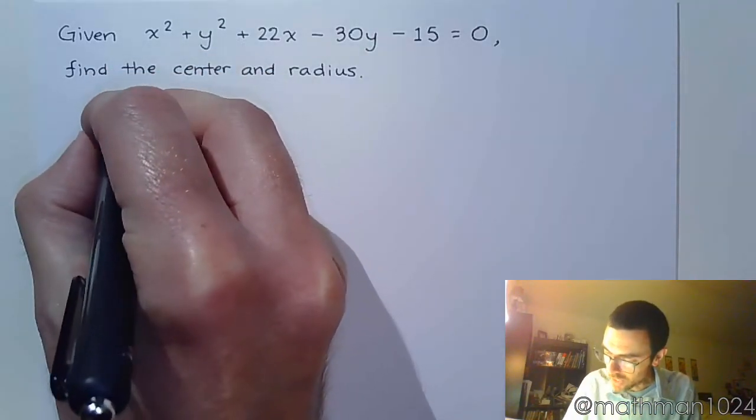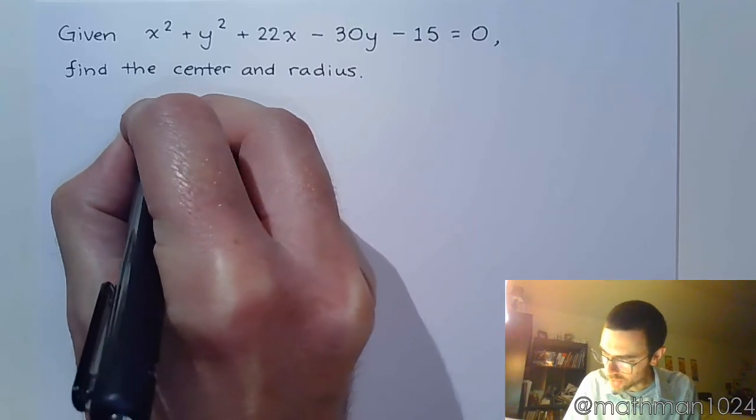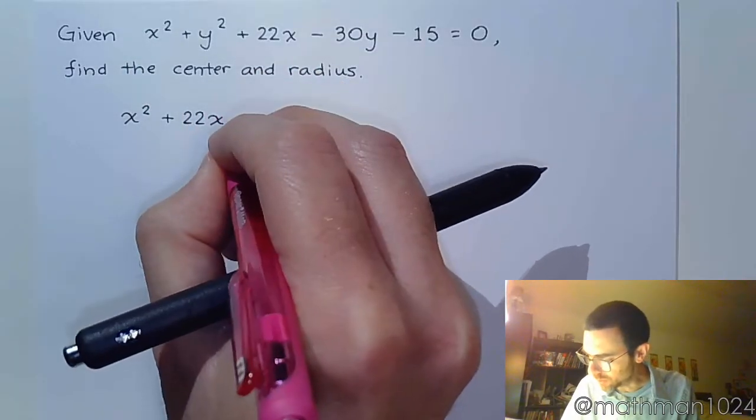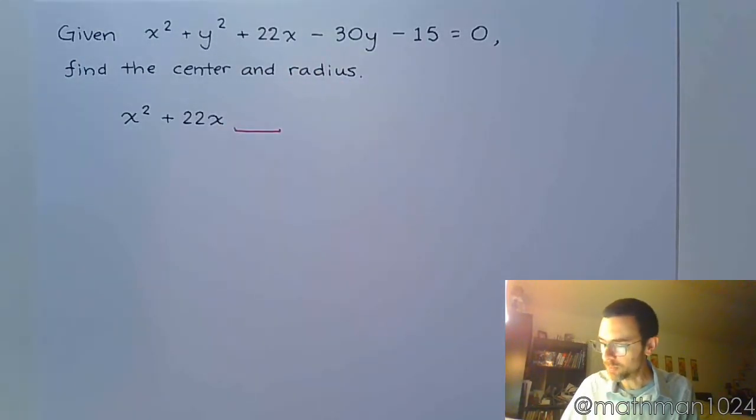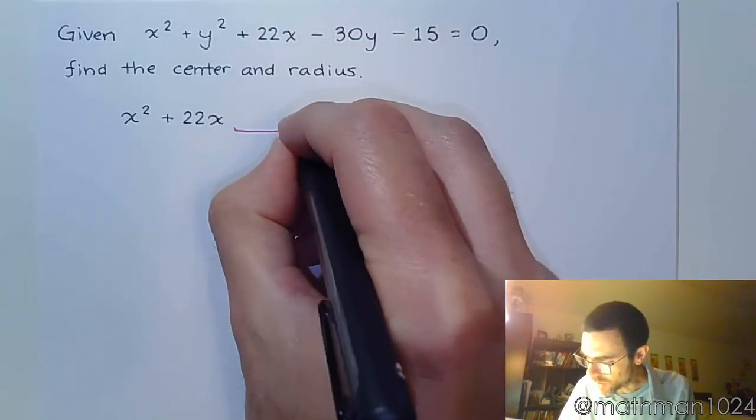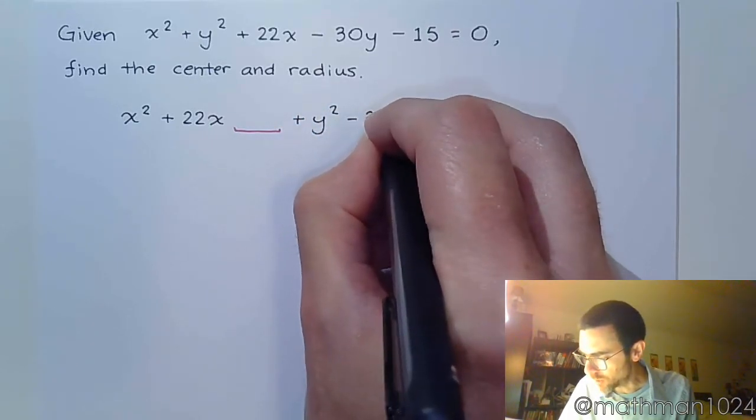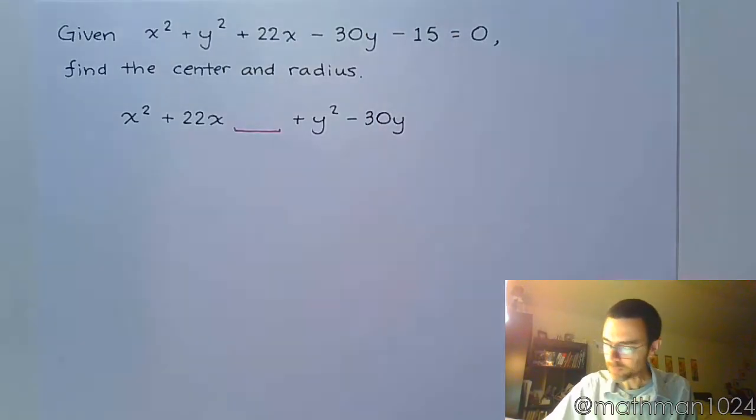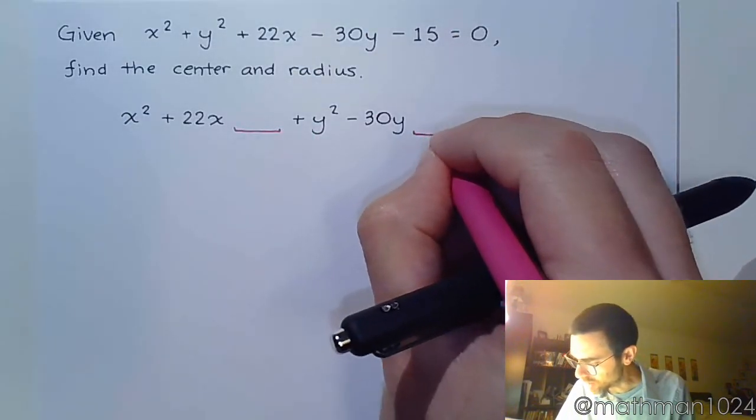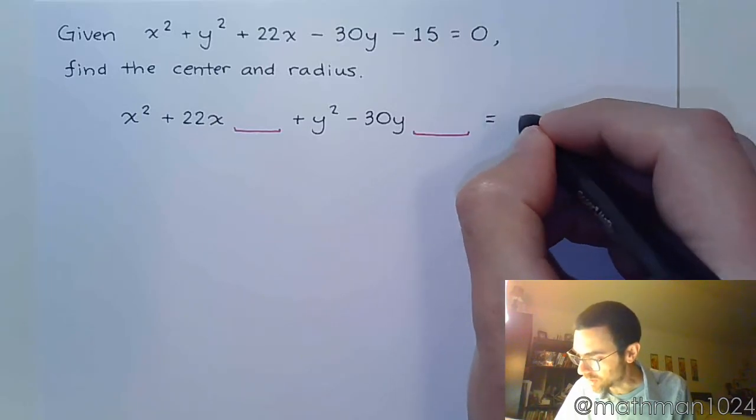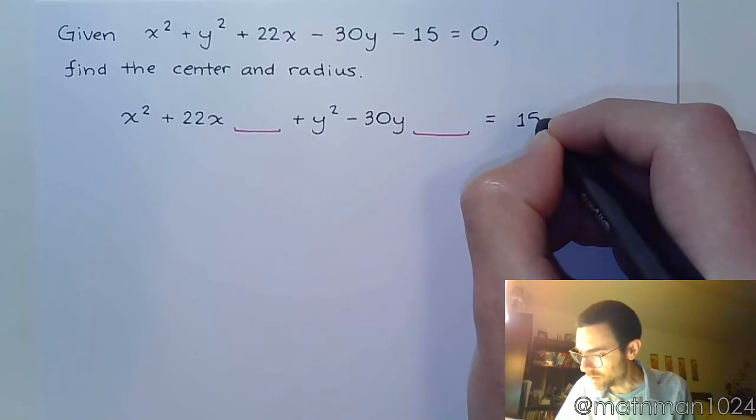So we're going to put the x's together. That's x squared plus 22x. Remember to leave some space for completing the square. And then we've got the y's. So we have y squared minus 30y. And there's another gap for us. We have to move the constant to the other side, so that's positive 15 over here.